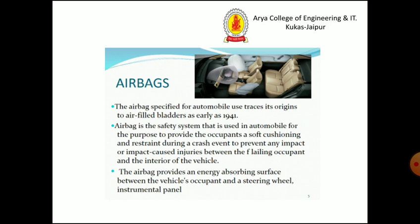The first safety system is airbags. The airbag's specified automobile use traces its origins to air-filled bladders as early as 1941. An airbag is a safety system used in automobiles to provide occupants a soft cushioning and restraint during a crash, and to prevent impact-caused injury between the occupants and the interior of the vehicle.